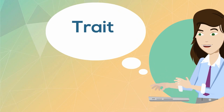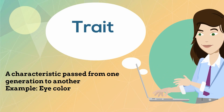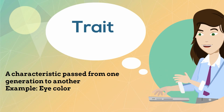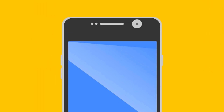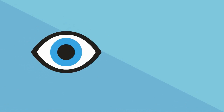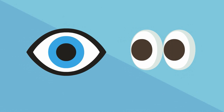A trait is a characteristic passed from one generation to another. For example, eye color. An allele is a different form of the same trait. For example, eye color is the trait and the alleles would be the different colors of an eye.